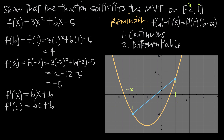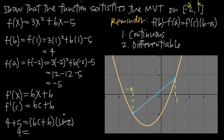Plugging everything into the formula: f(b) - f(a) = f'(c) · (b - a) becomes 4 - (-5) = (6c + 6)(1 - (-2)), which simplifies to 9 = (6c + 6)(3) = 18c + 18. Subtracting 18 from both sides: -9 = 18c. Dividing by 18: c = -1/2. So the x-value we're interested in is x = -1/2.